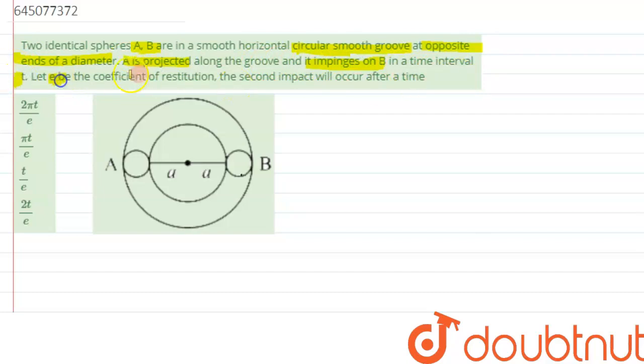Let e be the coefficient of restitution. We need to calculate the time after which the second impact will occur. Initially, the velocity of sphere A is u₁, and sphere B is at rest, so u₂ equals zero. Sphere A comes and collides with B, and the first collision takes place at time interval t.